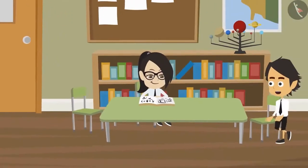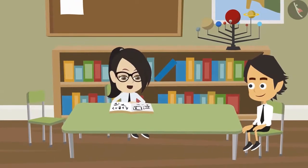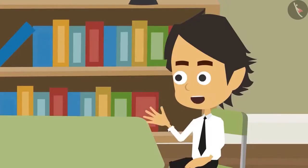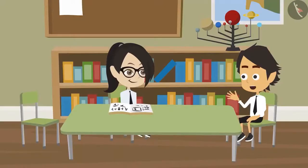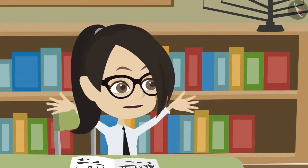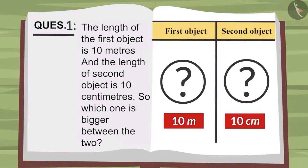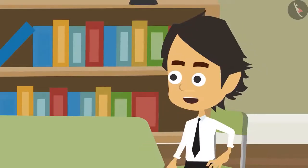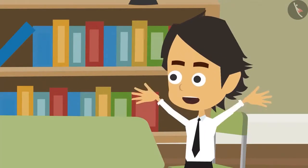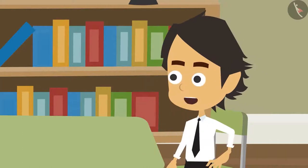What are you thinking, Vandana? I am not able to solve this question. What is the question? There are two objects. The height of the first object is 10 meters and the height of the second object is 10 centimeters. Which among them is bigger? What is there to think in this? This is a very easy question. It is not easy. Look properly — the length of both objects is 10, that means both of them are of the same height. Oh no, you got it all wrong. 10 is just the value. But to measure length, we don't just look at the value — we look at the unit of measurement too.